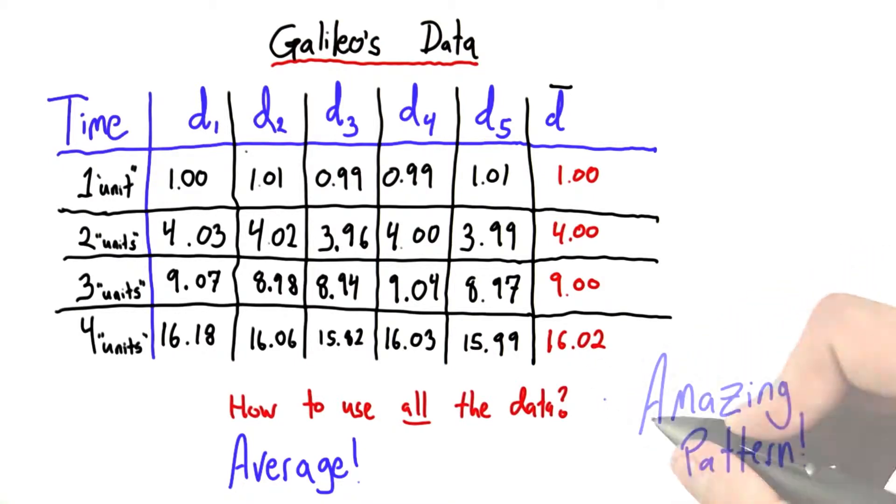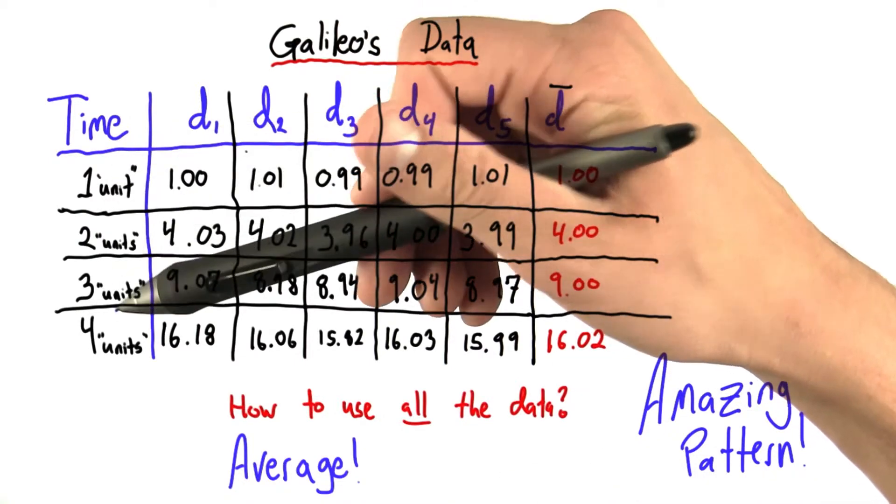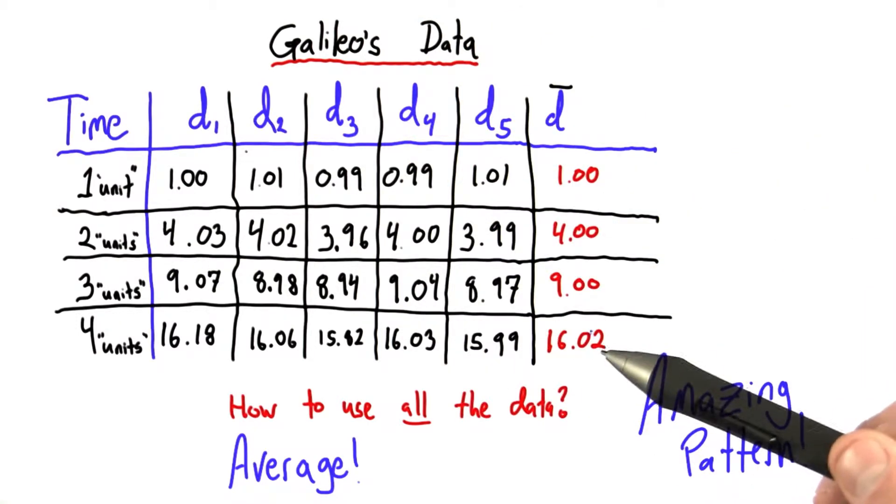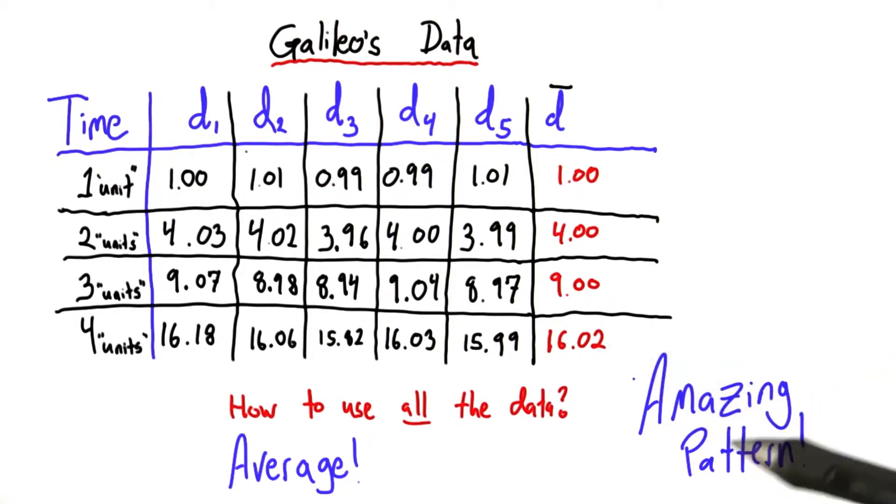That's an incredible pattern. It seems like there may be some relationship between distance and the square of time, but this 16.02 is really bumming me out. Does it really mean that this pattern is false?